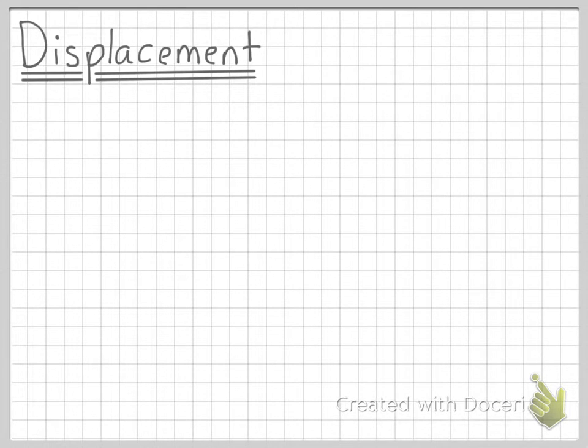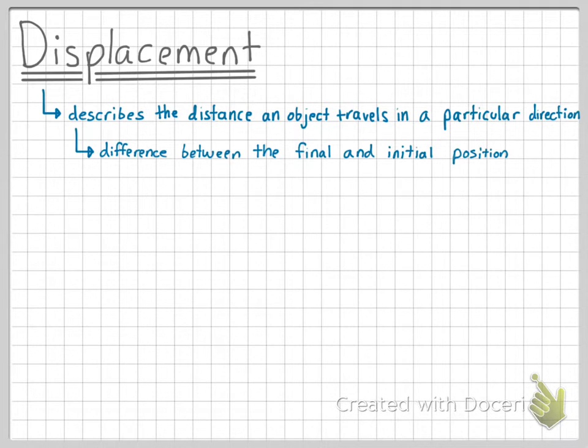This video covers the idea or concept of displacement. Displacement describes the distance an object travels in a particular direction. What is most confusing about the idea of displacement is its simplicity. Displacement literally is just the difference between the final and initial position of an object.